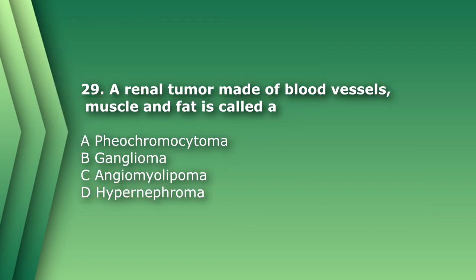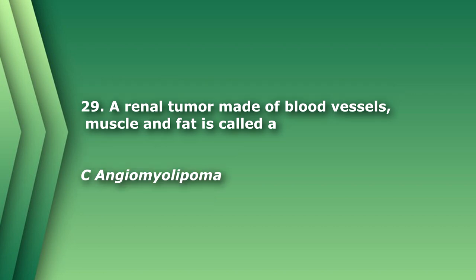Number 29. A renal tumor made up of blood vessels, muscle, and fat is called: A. Pheochromocytoma. B. Ganglioma. C. Angiomyolipoma. Or D. Hypernephroma. The answer is C, angiomyolipoma. Angio stands for blood vessels, myo stands for muscle, lipo stands for fat.